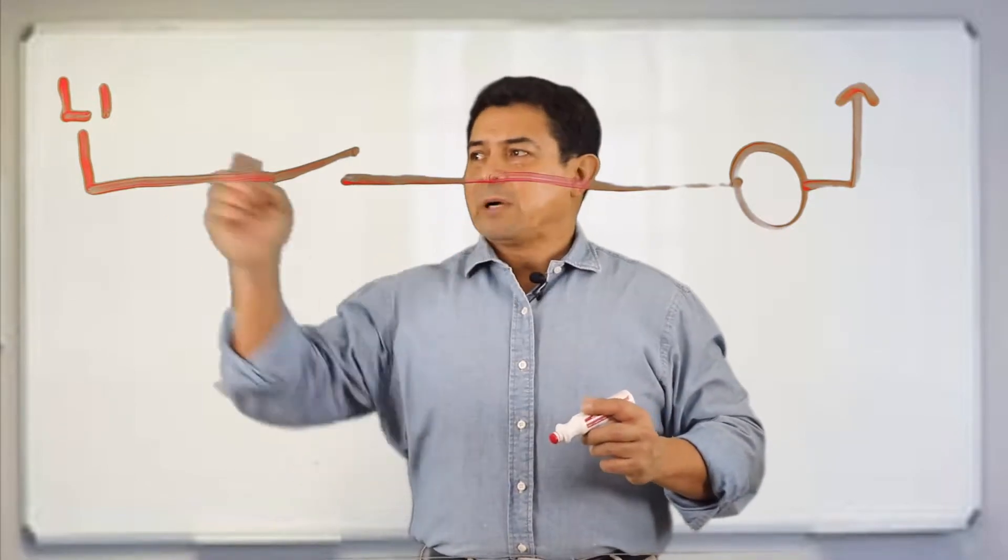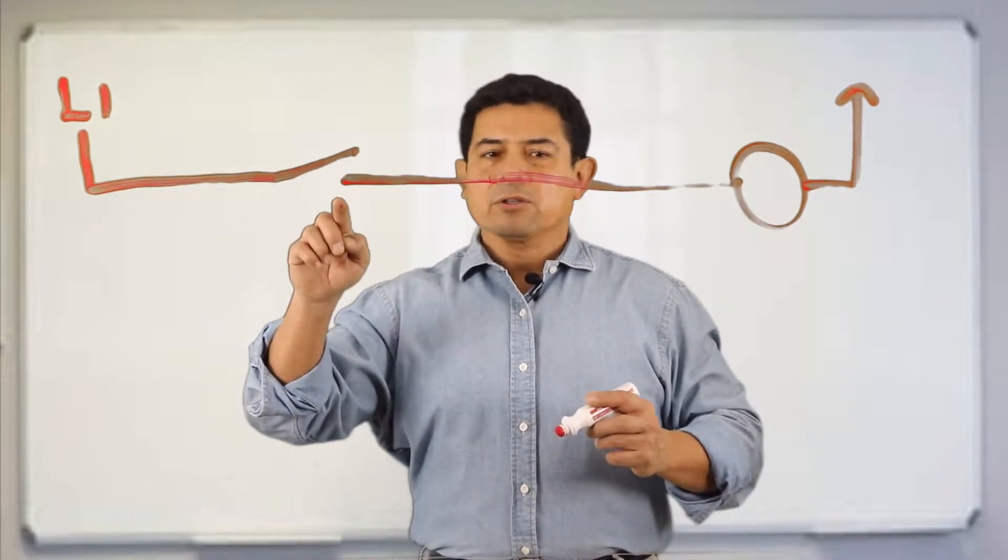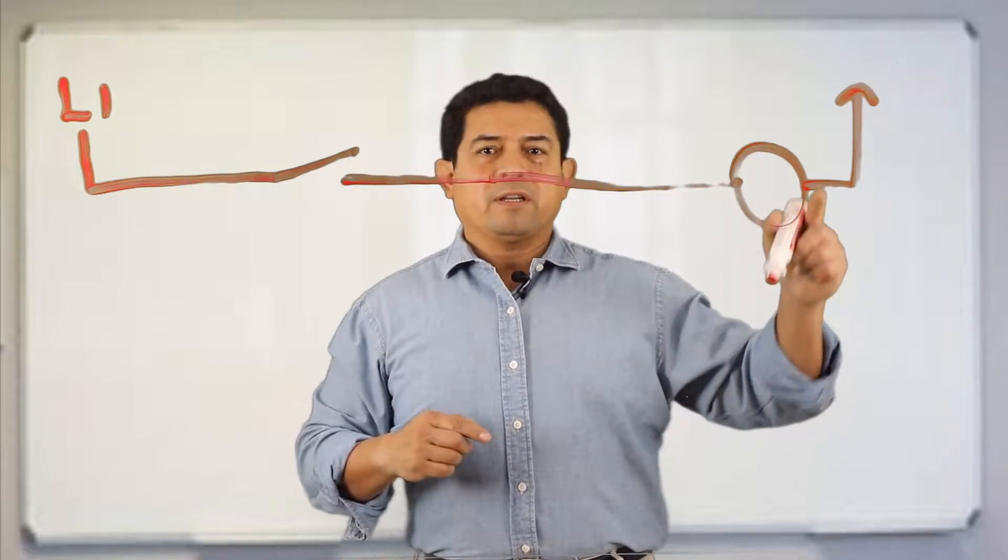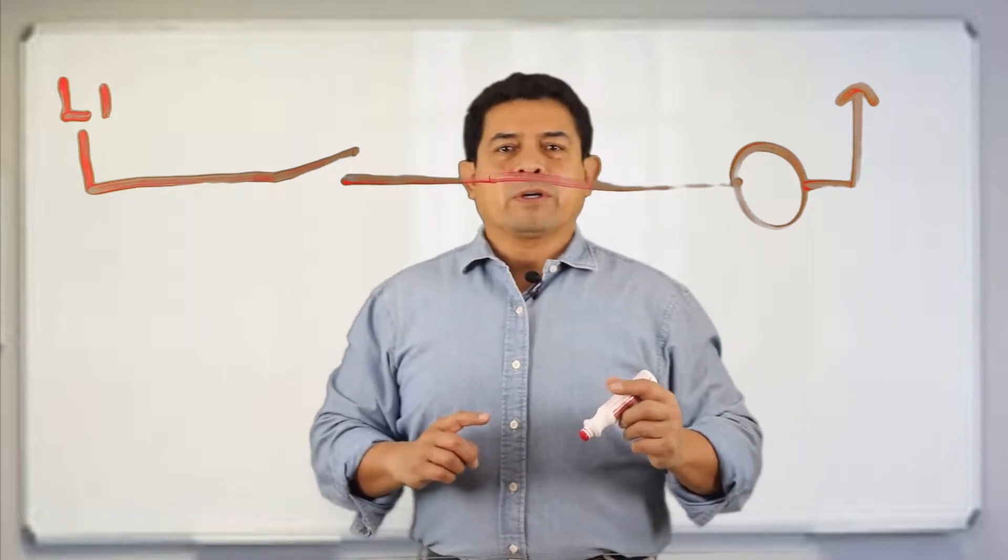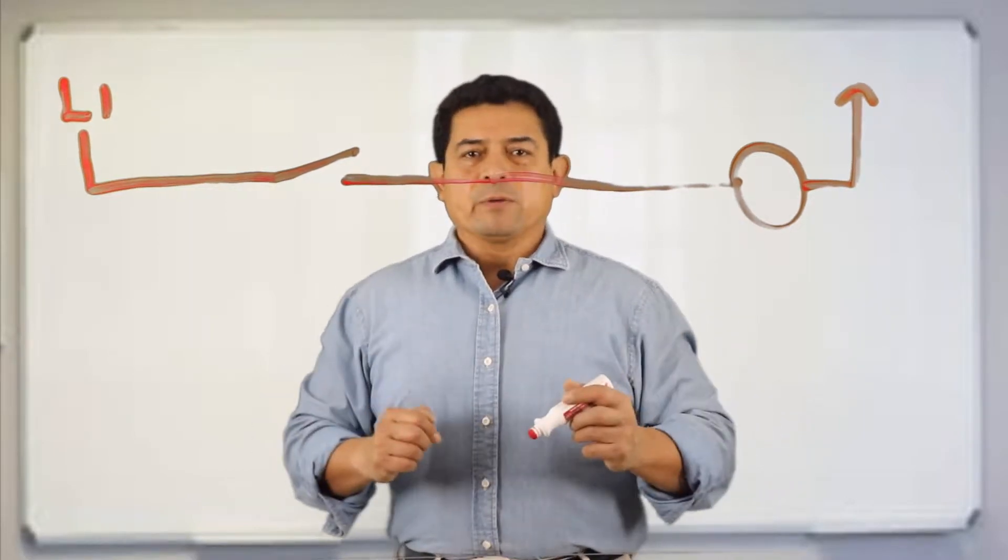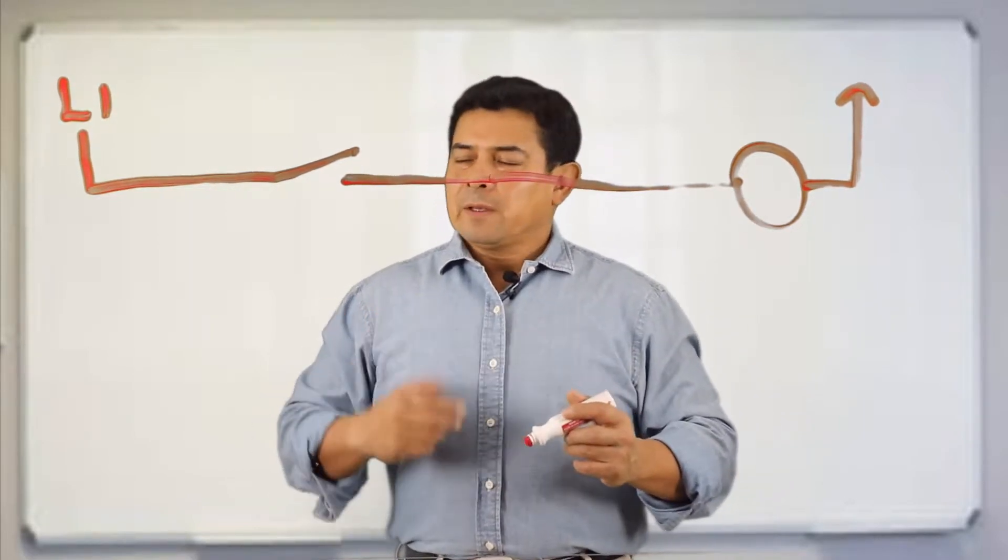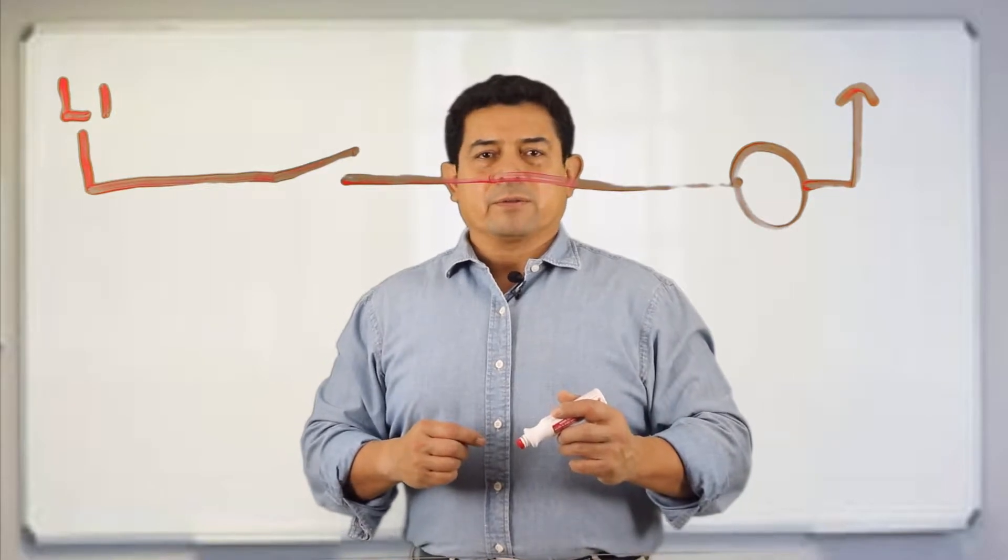So we need four things: power supply, conductor, switch, and a load. And then it needs to go back to where it came from. Now some students always want to argue the point. So we need to have a fuse. Got to have a fuse. Well you know you really don't need a fuse.